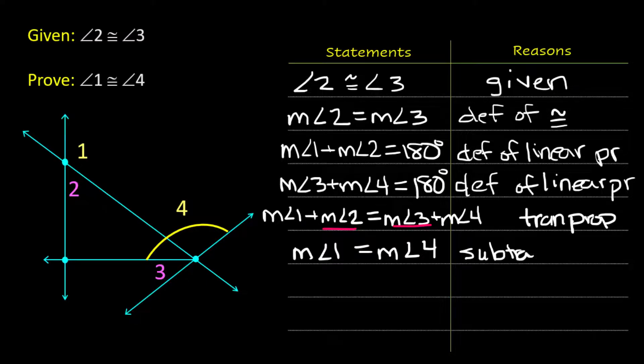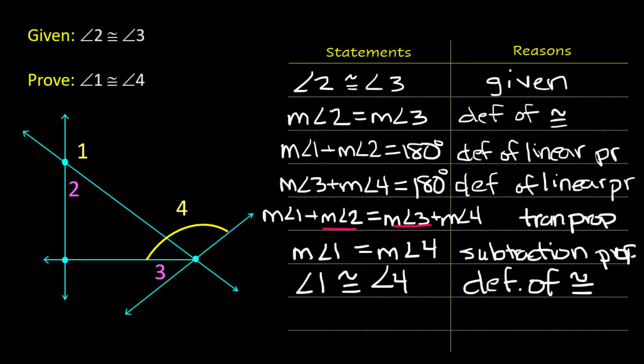We have the measure of 1 equal to the measure of 4. That means angle 1 must be congruent to angle 4. And that would be the definition of congruence that we used before. And we are done with this proof.